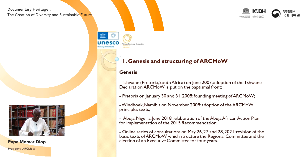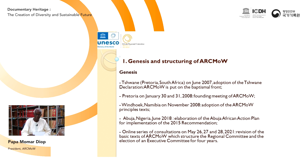On the sidelines of the eighth meeting of the International Advisory Committee, held in Pretoria, South Africa, from 11 to 15 June 2007, African participants organized a general assembly at which they adopted the Pretoria Declaration. In attendance were representatives from Ethiopia, Kenya, Malawi, Namibia, Senegal, South Africa, Zambia, and Zimbabwe.